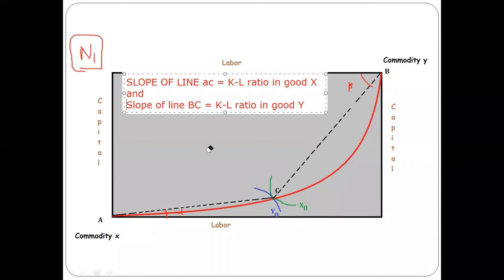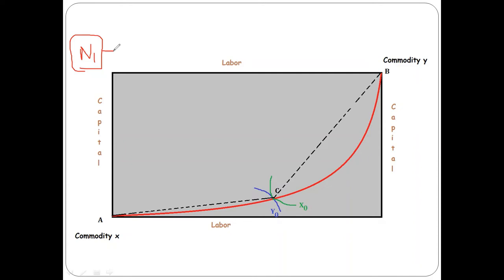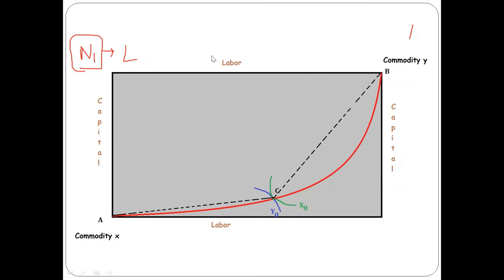As the nations start trading, according to the Heckscher-Ohlin theorem, nation one, being labor-abundant, specializes in production of commodity X, and nation two, being capital-abundant, specializes in commodity Y. As nation one starts specializing in X, the isoquant shifts from X-naught to X1, and due to scarcity of resources, Y moves to Y1, so we move to a new point D on the contract curve.